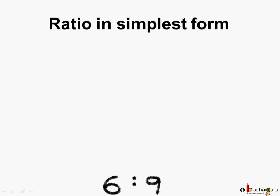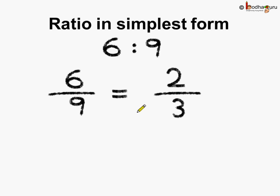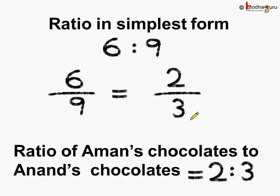Same way, if we need to find the ratio of Aman's chocolate to Anand's chocolate, which is 6 is to 9 in simplest form, then it is written as 6 by 9. This can be reduced by dividing both the numerator and denominator by 3. 3 twos are 6 and 3 threes are 9, so this gets reduced to 2 by 3. The ratio of Aman's chocolate to Anand's chocolate is equal to 2 is to 3.